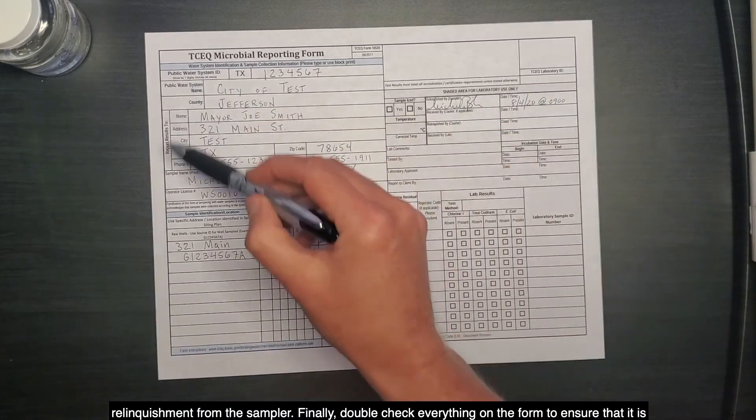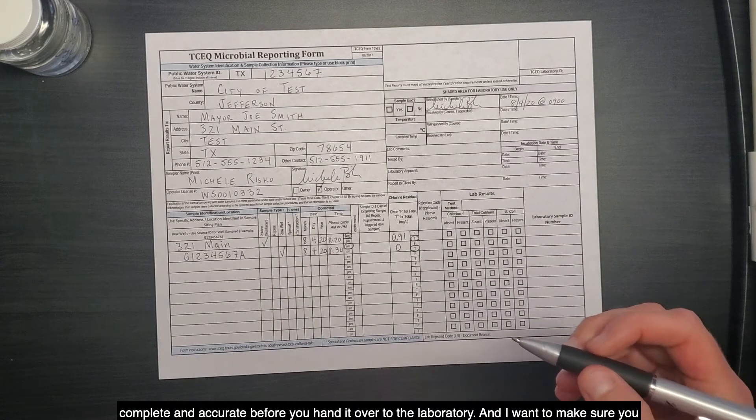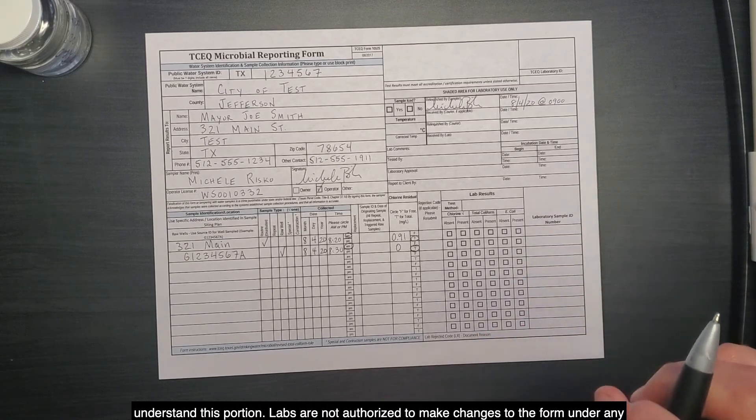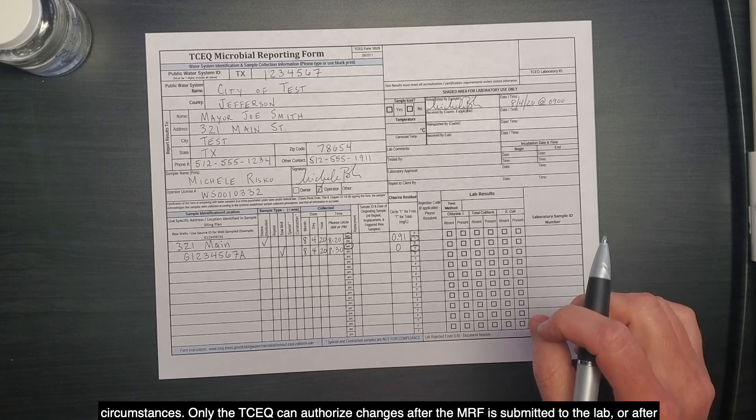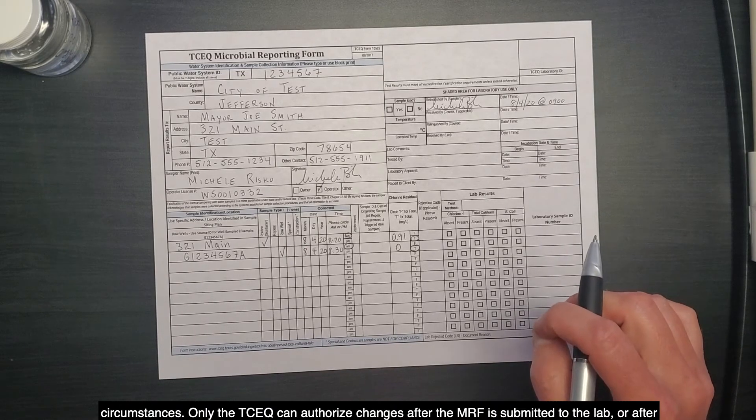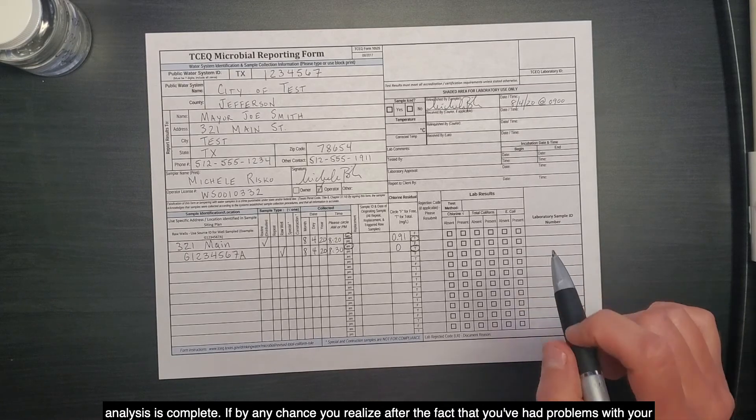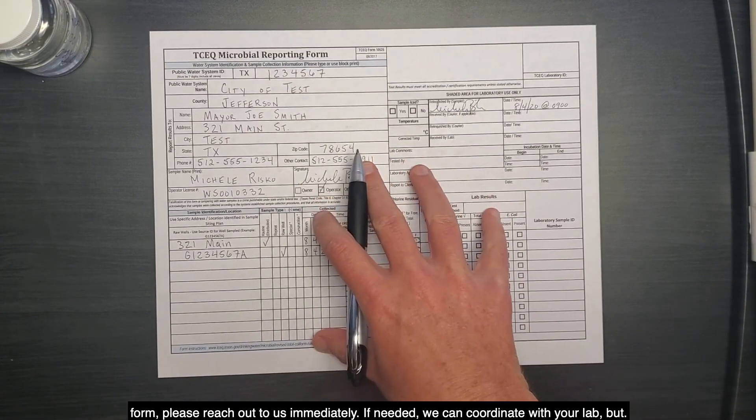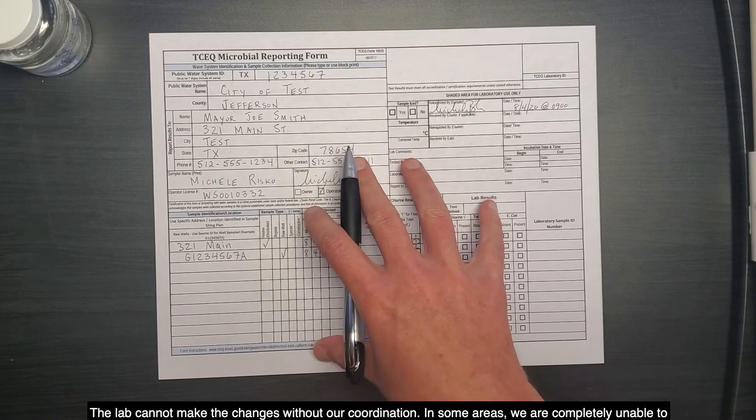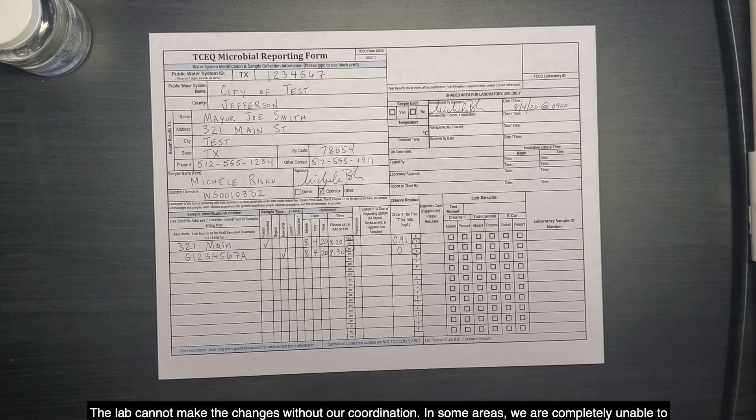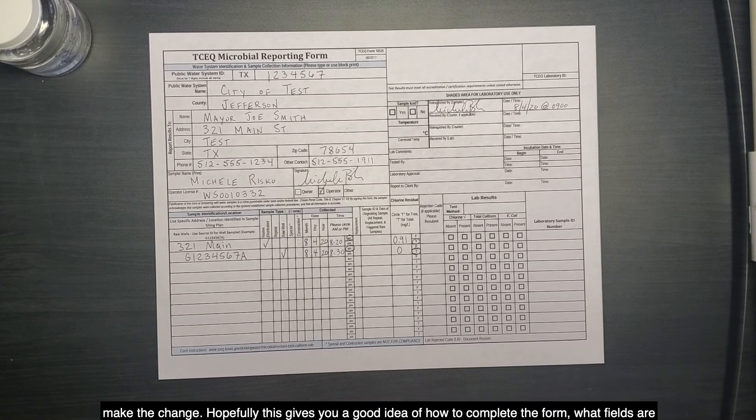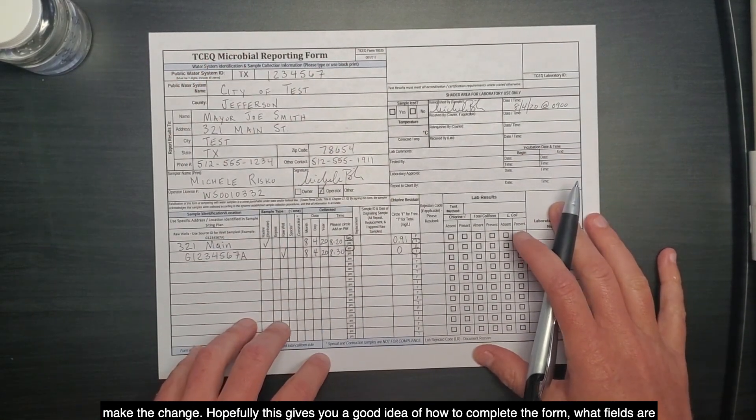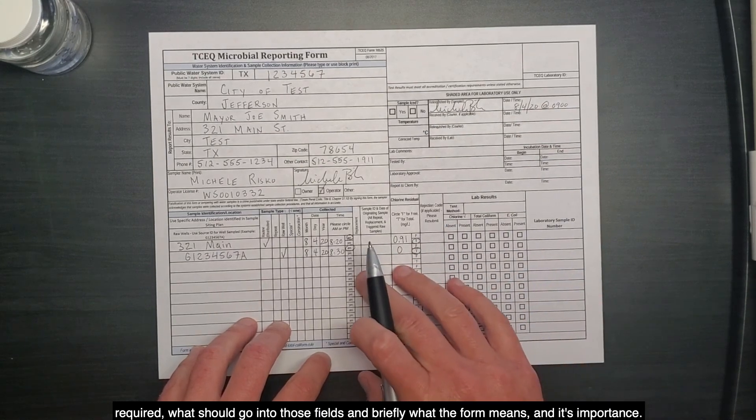Finally, double-check everything on the form to ensure that it is complete and accurate before you hand it over to the laboratory. And I want to make sure you understand this portion. Labs are not authorized to make changes to the form under any circumstances. Only the TCEQ can authorize changes after the MRF is submitted to the lab or after analysis is complete. If by any chance you realize after the fact that you've had problems with your form, please reach out to us immediately. If needed, we can coordinate with your lab, but the lab cannot make the changes without our coordination. In some areas, we are completely unable to make the change. Hopefully, this gives you a good idea of how to complete the form, what fields are required, what should go into those fields, and briefly, what the form means and its importance.